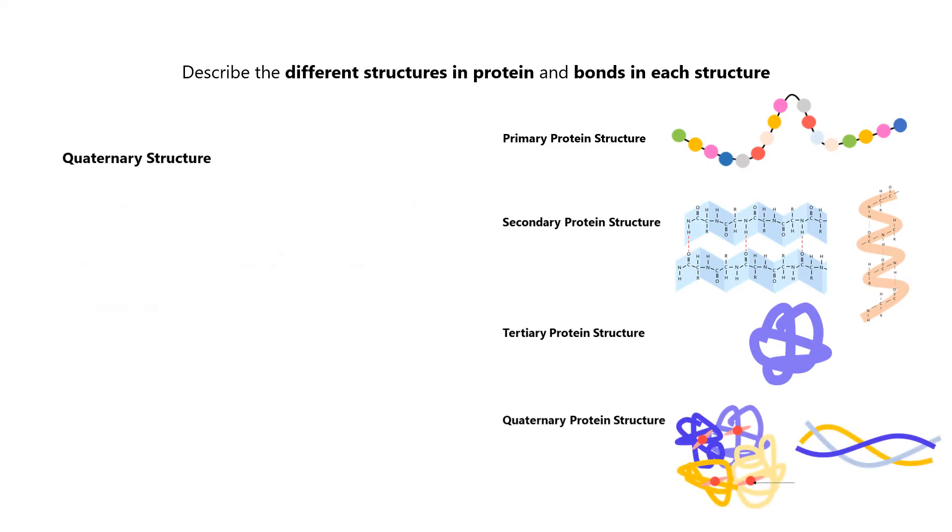Lastly, the quaternary structure refers to the association of two or more polypeptide chains to form a functional protein.